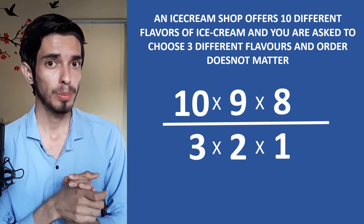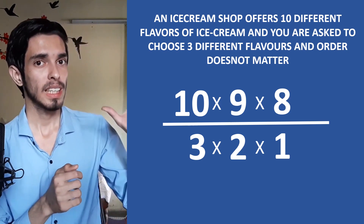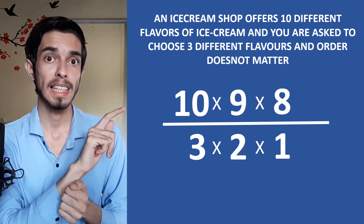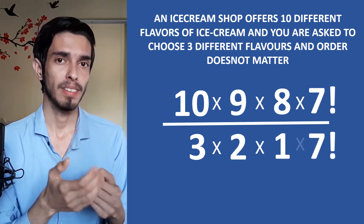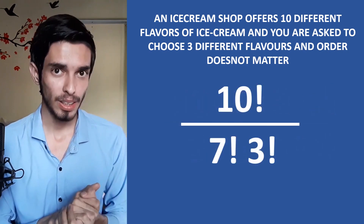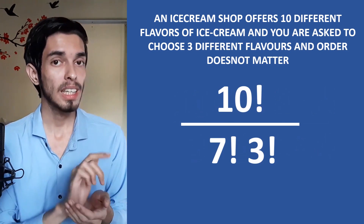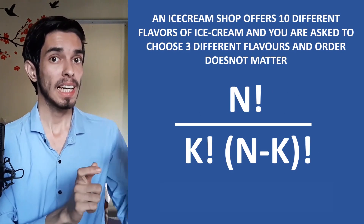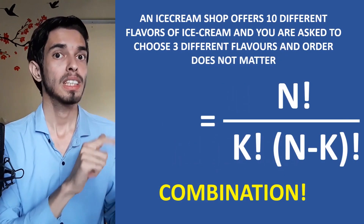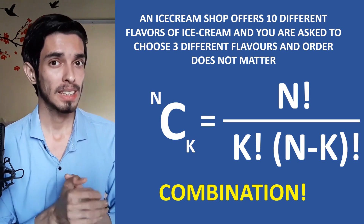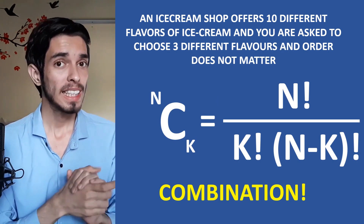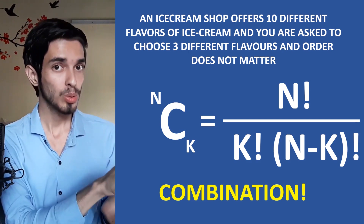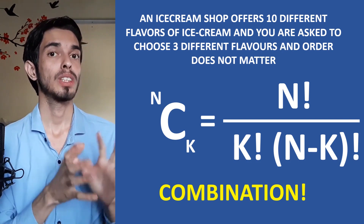Factorials are really important in counting problems. We can rewrite (10 × 9 × 8) ÷ (3 × 2 × 1) as 10! ÷ (7! × 3!), since 7 factorial cancels from 10 factorial. In general, this is written as N! ÷ (K! × (N−K)!), which is the formula for combination, written as nCk and read as 'n choose k.' This is used when we choose K things from N things and the order in which we choose does not matter.